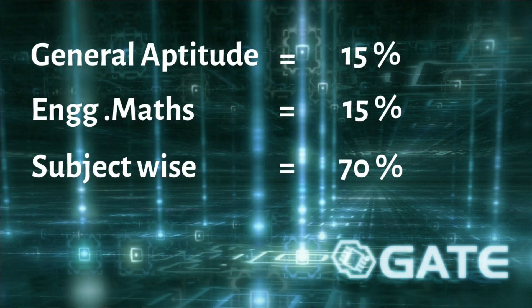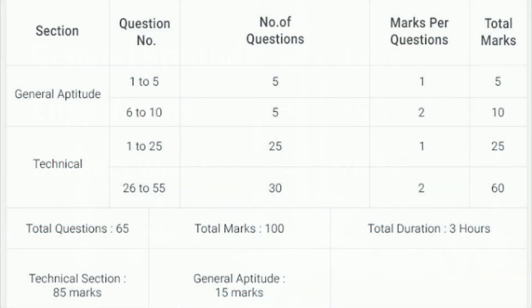The exam pattern is divided into 3 parts: General Aptitude, Engineering Mathematics, and subject-wise questions. General Aptitude consists of 15%, Engineering Mathematics consists of 15%, and subject-wise questions consist of 70%. Here are the marks for each section — take a look. Technical means the combination of Engineering Mathematics and subject-wise questions. Subject-wise questions cover various departments in engineering like ECE, Civil, Computer Science, and so on.